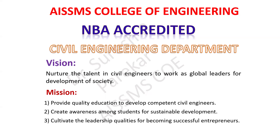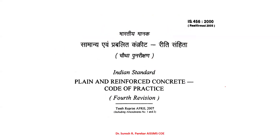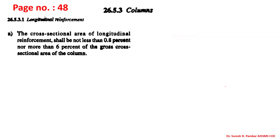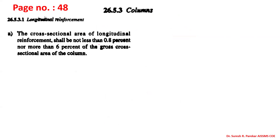Good afternoon. Now we will see all clauses related with columns. We have already gone through these clauses. Page number 48, longitudinal reinforcement. The minimum area of longitudinal reinforcement is given as 0.8 percent and the maximum is given as six percent.